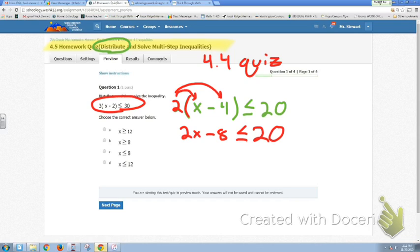So you have to make sure you keep track of each step. So once you distribute, this just becomes a two-step inequality. We're always going to undo the additive inverse stuff first. So undo this negative 8 here by adding 8 to both sides.